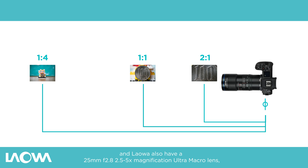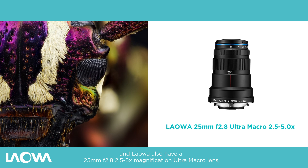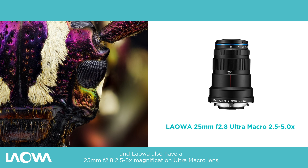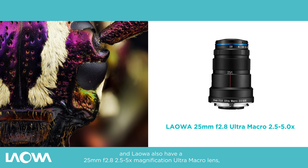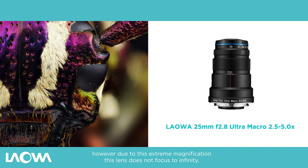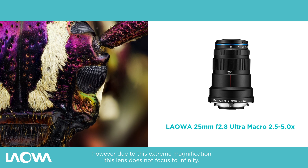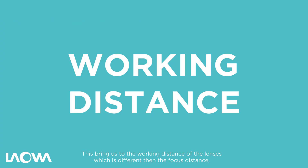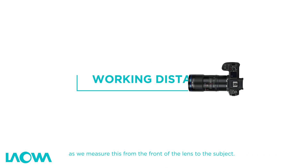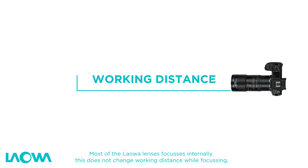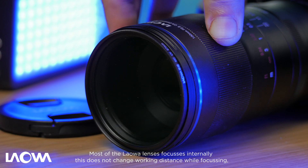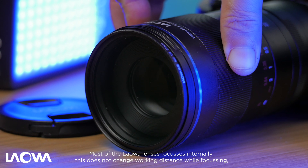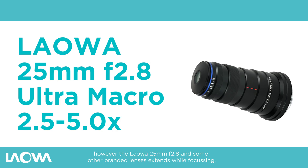Laowa also have a 25mm f/2.8 2.5 to 5 times magnification ultra macro lens. However, due to the extreme magnification, this lens does not focus to infinity. This brings us to the working distance of the lenses, which is different from the focus distance — we measure working distance from the front of the lens to the subject. Most Laowa lenses focus internally, which does not change the working distance while focusing.